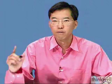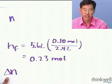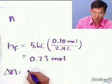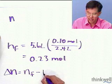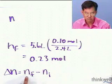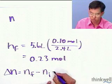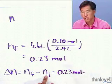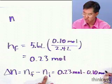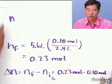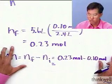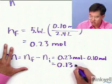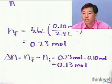That's the final number of moles. But remember, the problem asked how many moles we've added. The change in moles, delta n, equals the final number of moles minus the initial number of moles. We've already calculated the final: it's 0.23 moles. The initial number of moles was 0.10 moles. So the correct answer is that we've added 0.13 moles.